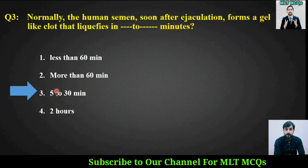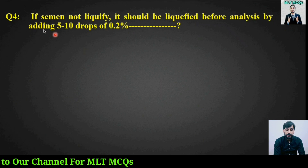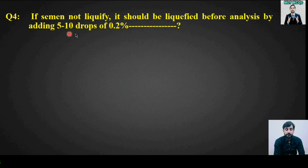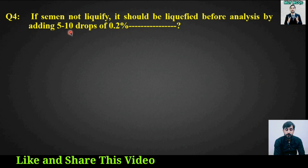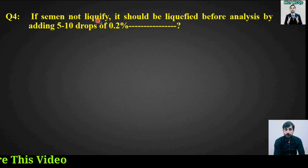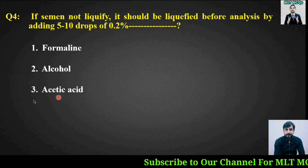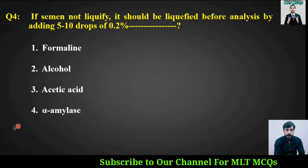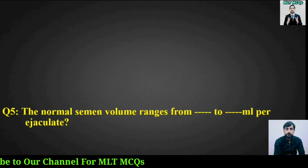MCQ number four: If semen does not liquefy, it should be liquefied before analysis by adding five to ten drops of 0.2 percent of which chemical? Options are: formalin, alcohol, acetic acid, or alpha amylase. The right answer is option number four — alpha amylase.